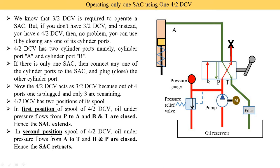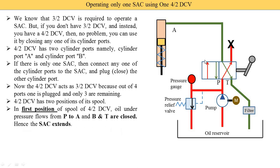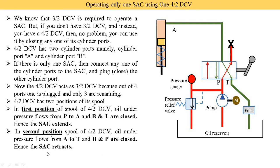The return path A to T is open. Port A is connected with port T. How does oil come back into port A? In the earlier case we supplied P to A. But here we use a single acting cylinder of spring return type. When the extension is complete, the piston starts to move from the bottom to top — upward — due to the spring force. As the piston moves up, the oil in the upper part of the cylinder is pushed into the pipe, comes through the green pipe into port A, goes from port A to port T, and returns to the oil reservoir through the filter. During the second position, the cylinder retracts.